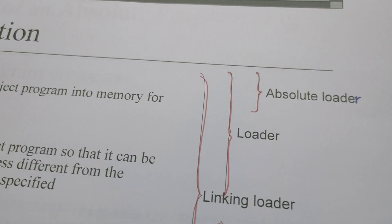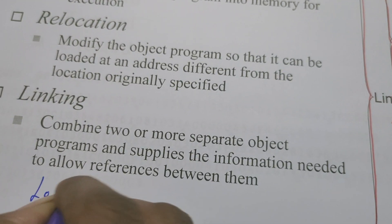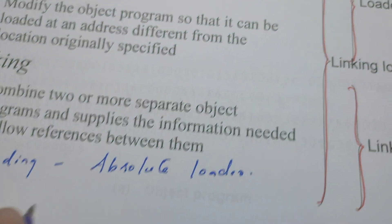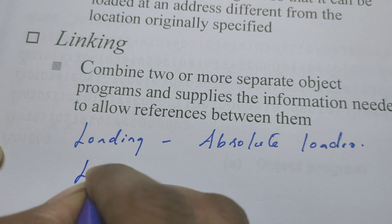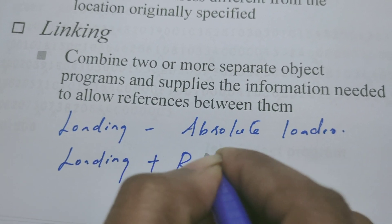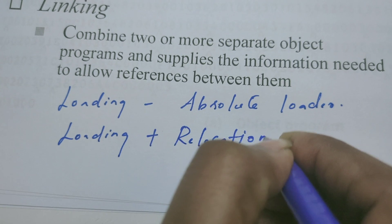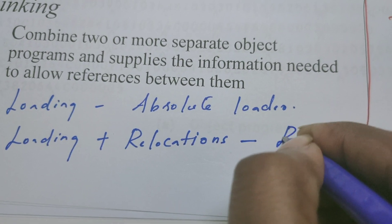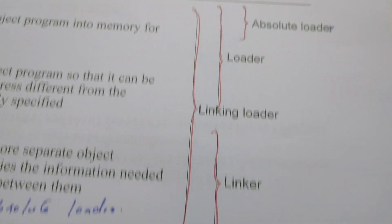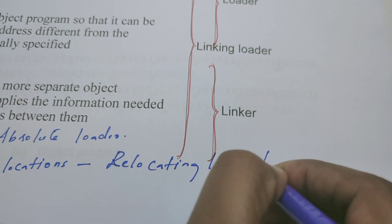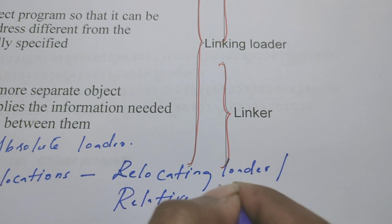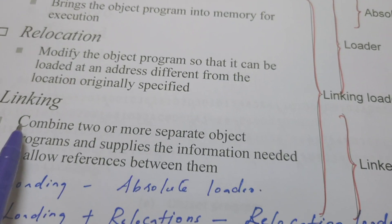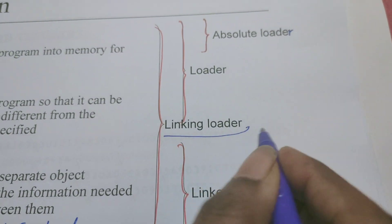These are the three tasks we are expecting the loader and the linker to do. If software does only loading, that system software is known as an absolute loader. If loading plus relocation — these two tasks are done together — then we can call that system software a relocating loader or relative loader.